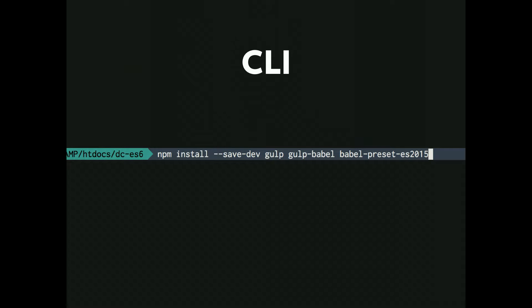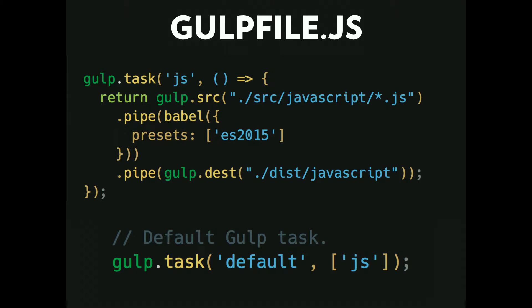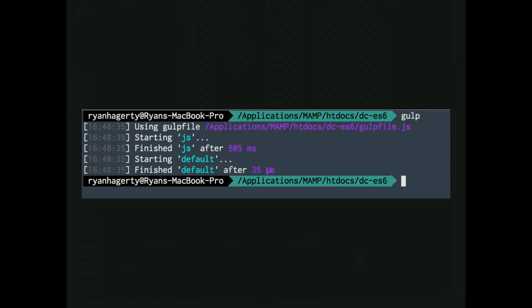I use Gulp in this demo. I install Gulp, called Babel, and Babel preset ES2015 for my packages. In my Gulpfile, I have a task called JS that checks out the source folder, pipes Babel through it, and outputs to the dist folder. Run Gulp, boom, done — I have ES5 code.